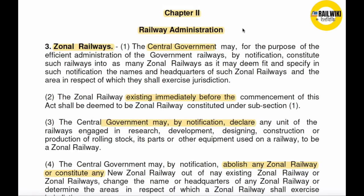The decision making structure is the railway board, then the general railway, then the division. This is the structure of the central government notification, so that it will be efficient and smooth administration.